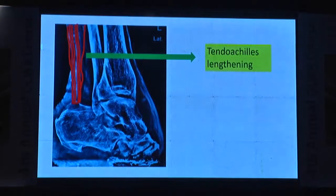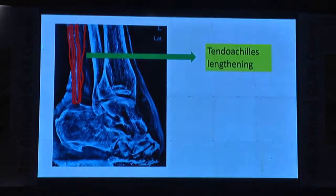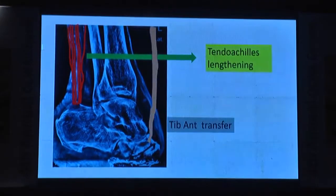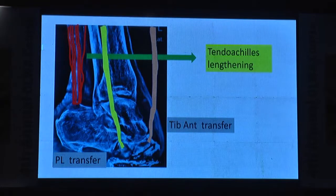What you need is lengthening of the tendo Achilles, transfer of tibialis anterior, and balancing with the peroneus longus transfer.